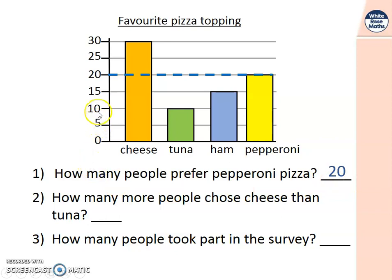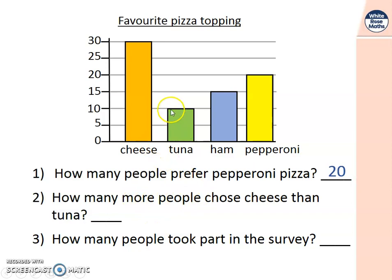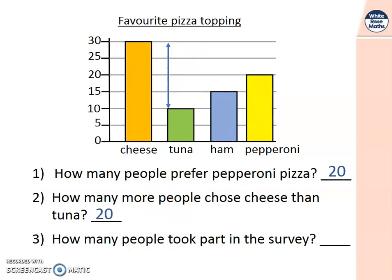Did you notice that it's going up in fives today? How many more people chose cheese than tuna? We need to find the information for cheese and the information for tuna, and find the difference between them. Remember at the side we're counting in fives: 5, 10, 15, 20. So 20 more people chose cheese than tuna.